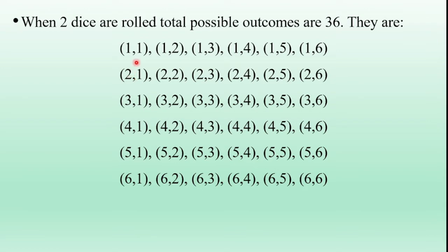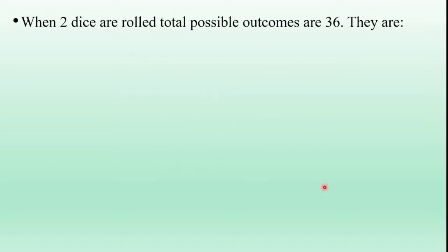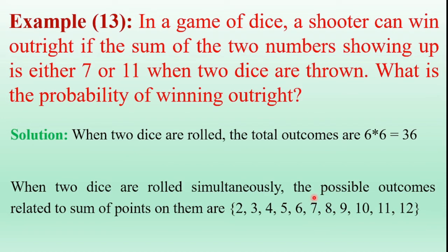The minimum value of the sum of the numbers appearing on two dice is 1 plus 1 equals 2. The maximum sum is 6 plus 6 equals 12. So the sums of the numbers appearing on the two dice when two dice are thrown are: 2, 3, 4, 5, 6, 7, 8, 9, 10, 11, 12.